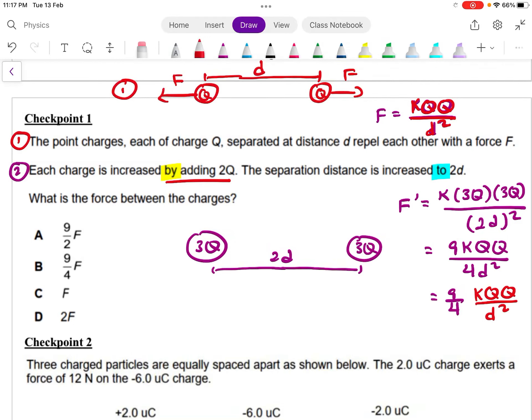Alright, so let's go through checkpoint 1 of our electric field. The first, we have these point charges, each of charge Q, positive charge Q, separated by a distance D repelled each other with a force F.